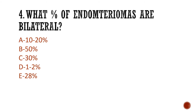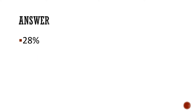Question 4: What percentage of endometriomas are bilateral? Is it A) 10–20%, B) 50%, C) 30%, D) 1–2%, or E) 28%? The answer is 28%.